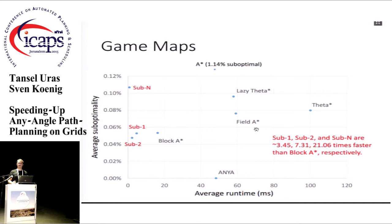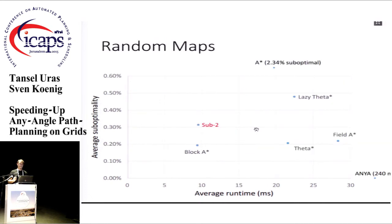Different levels of hierarchies offer different trade-offs. If you don't have much preprocessing time, simple sub-goal graphs can be used, which take at most half a second. If path length isn't a major concern — for example, 0.1 percent suboptimality — n-level sub-goal graphs are 21 times faster than the next fastest algorithm, Block A-star. A good trade-off is using two-level sub-goal graphs. On random maps, sub-goal graphs don't perform as well because random maps have many corners, giving simple sub-goal graphs many vertices, though they are still faster than A-star.